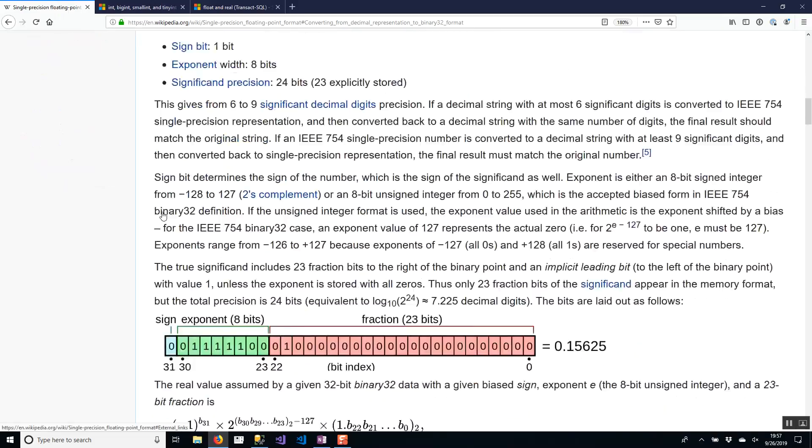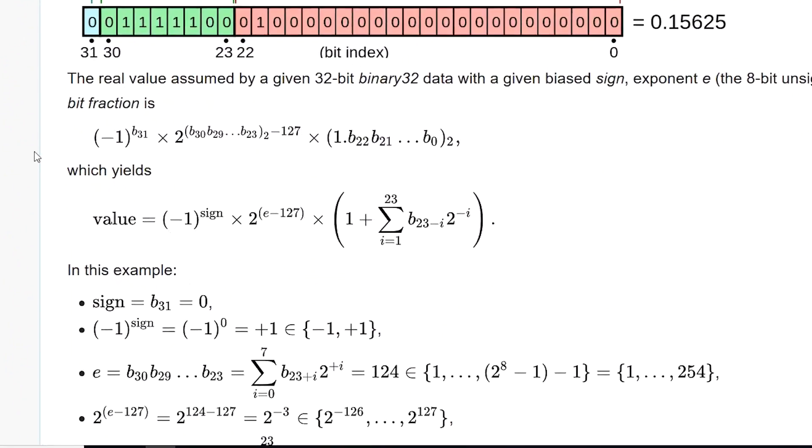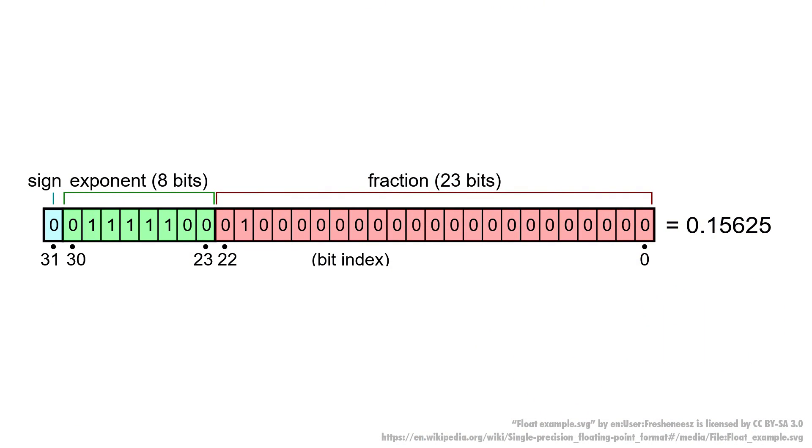So let's actually break down how floating point number data gets encoded. If you check out the Wikipedia page for single precision floating point numbers, it's actually very precise on how it works, but it uses a bunch of math symbols I honestly haven't used since high school. Since this is a SQL channel, let's rewrite this and show how floating point numbers work using SQL syntax. The Wikipedia page gives us a nice example with the number 0.15625, and all those 32 bits of ones and zeros next to it are our actual floating point number encoding.